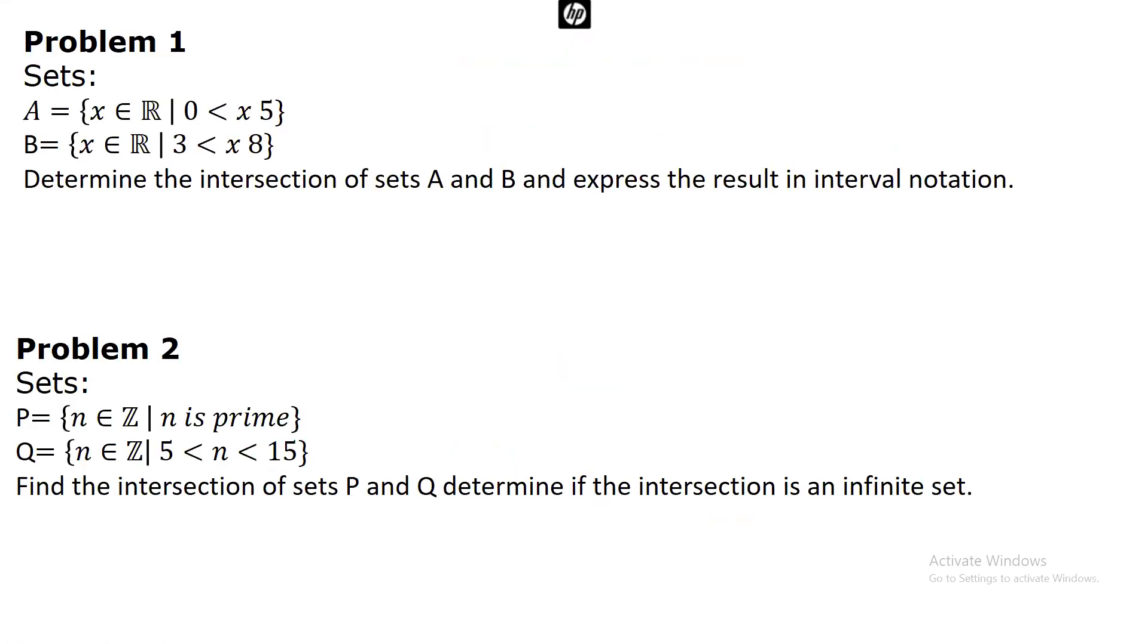Now, this is the first problem here. If you look at problem one here, problem one is not tricky. I think it's straightforward. Now, if you look at it here, the intersection of A and B is denoted by this, and it's the set of real numbers that satisfies both conditions.